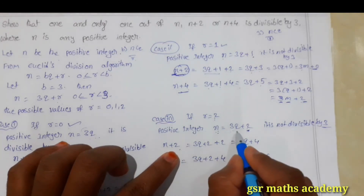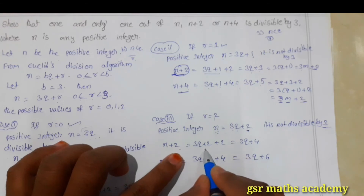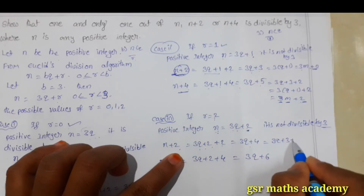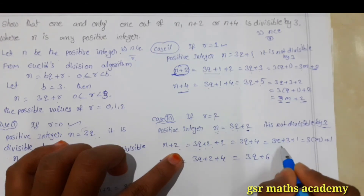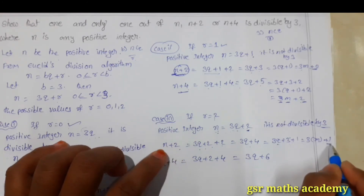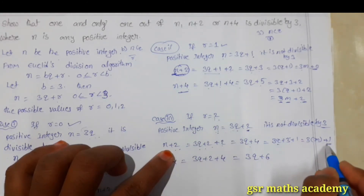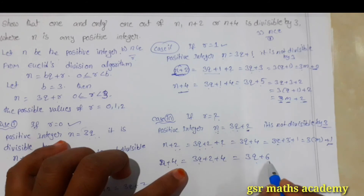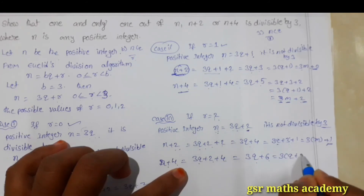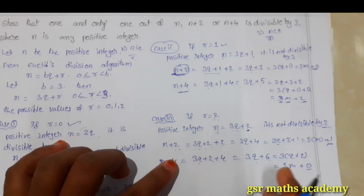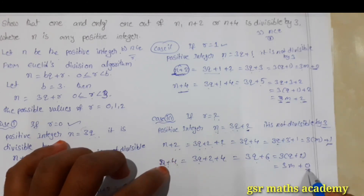And if you take n plus 2, since n equals 3q plus 2, then n plus 2 equals 3q plus 2 plus 2, which is 3q plus 4. I can write this as 3q plus 3 plus 1, which gives 3(q plus 1) plus 1, equals 3m plus 1. On dividing by 3, we get remainder 1, so n plus 2 is also not divisible by 3. And if you take n plus 4, it becomes 3q plus 2 plus 4, which is 3q plus 6, and I can write it as 3(q plus 2), which equals 3m. We have remainder 0, so n plus 4 is divisible by 3.